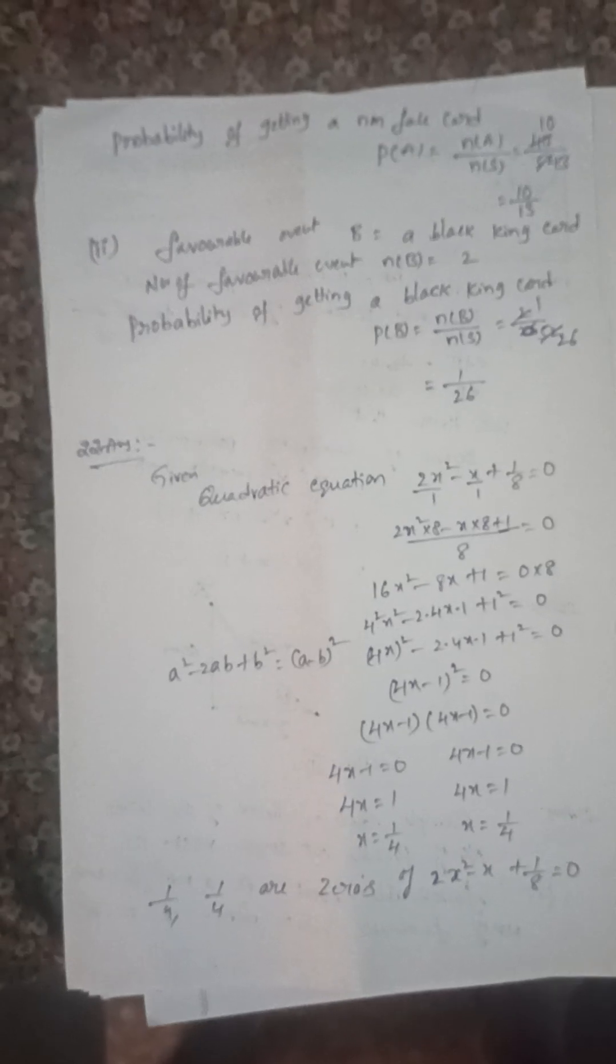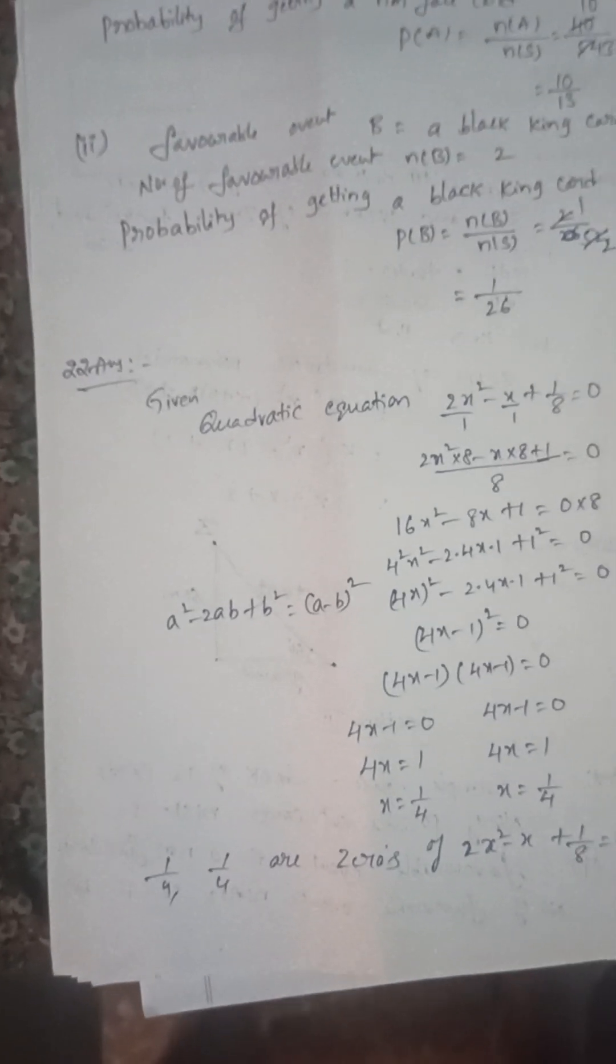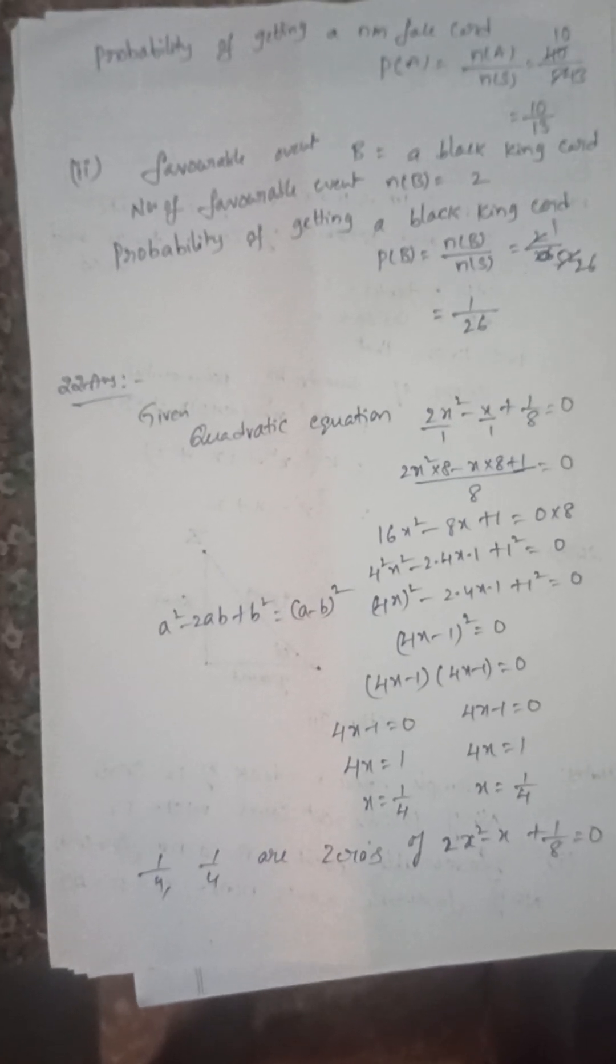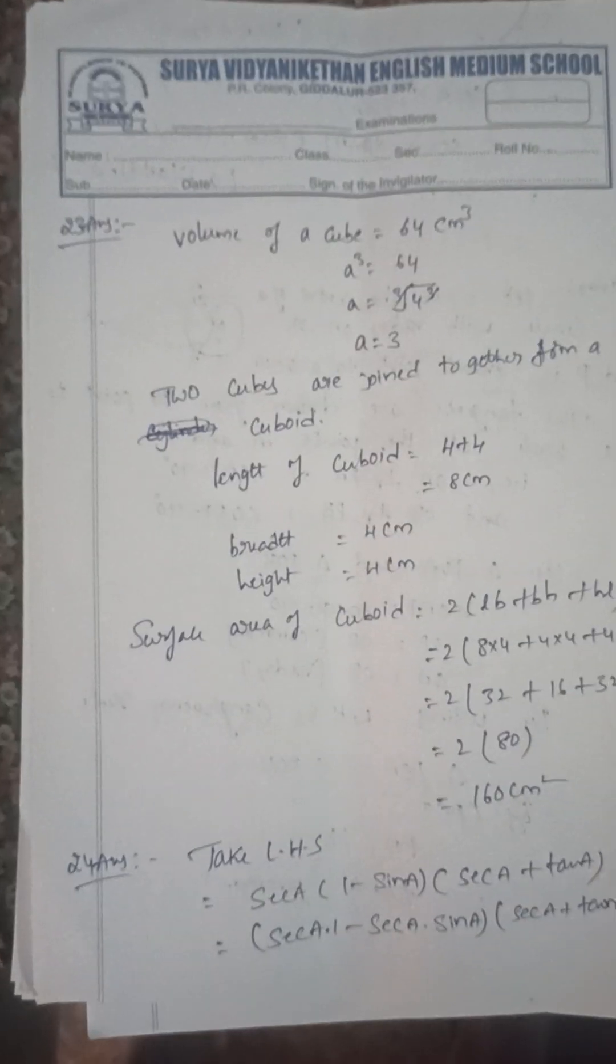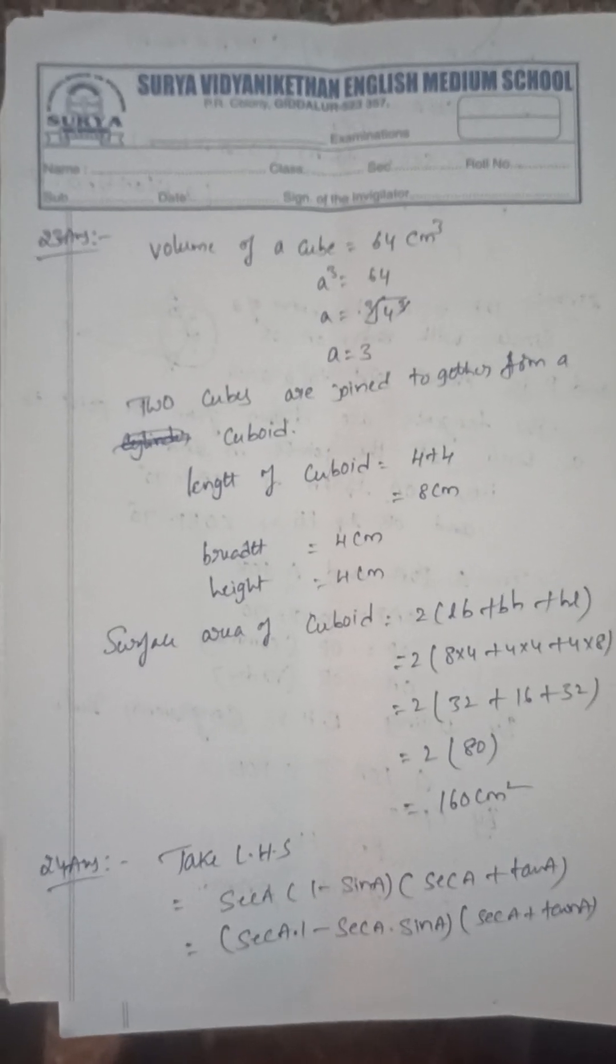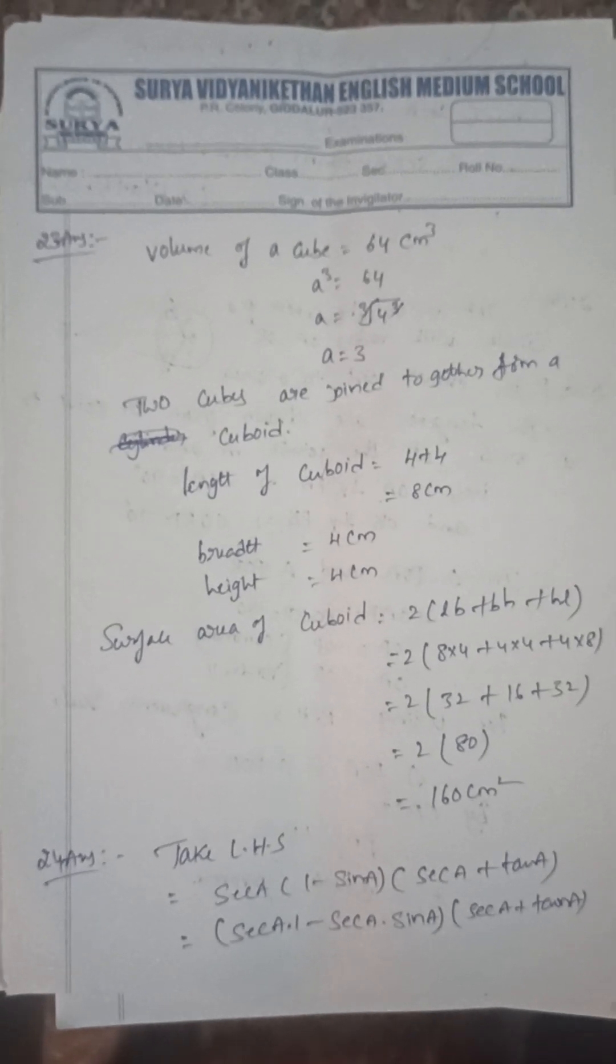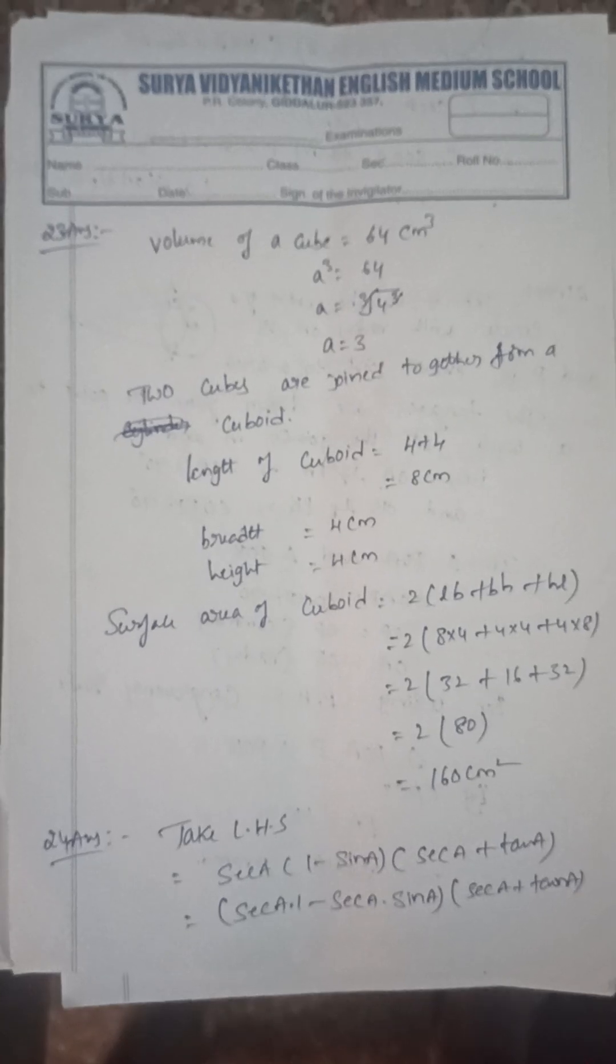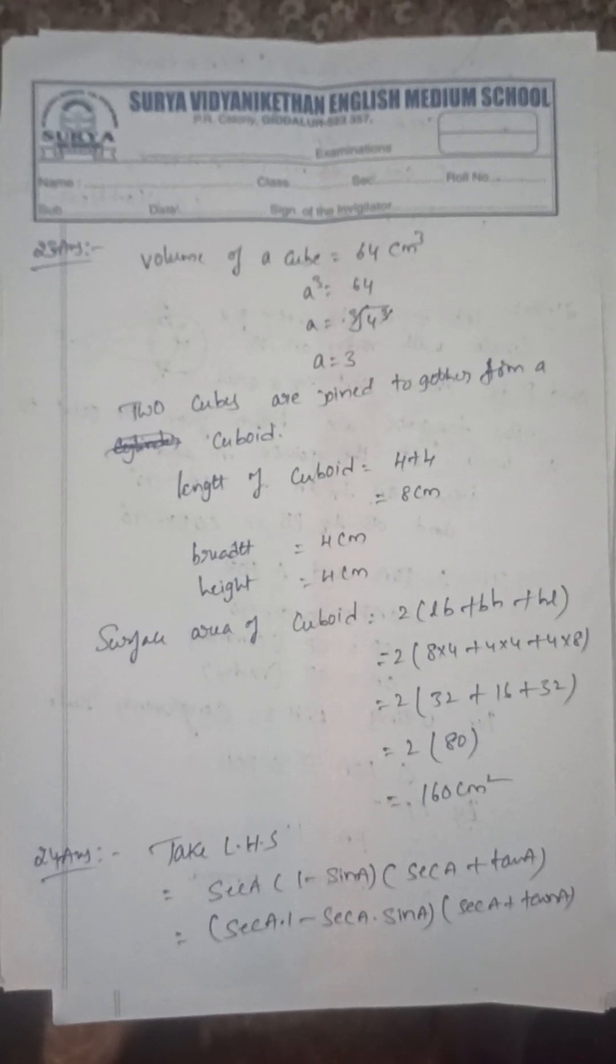Next, find the zeros of the quadratic equation 2x² - x + 1/8, so that is x = 1/4, x = 1/4. Next, two cubes are joined together to form a cuboid. Find the surface area of the cuboid: 2(lb + bh + hl), that equals 160 cm². Next, prove that sec A(1 - sin A)(sec A + tan A) = 1.